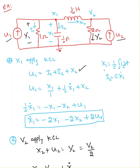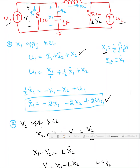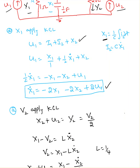For i2, which is the current passing through the capacitor: the voltage drop across the capacitor is 1/C times the integral of i2 dt, so i2 equals C times x1_dot. With C equal to 1/2 farad, substituting gives u1 equals x1 plus (1/2)x1_dot plus x2. Rearranging, the first state equation is x1_dot equals -2x1 - 2x2 + 2u1.